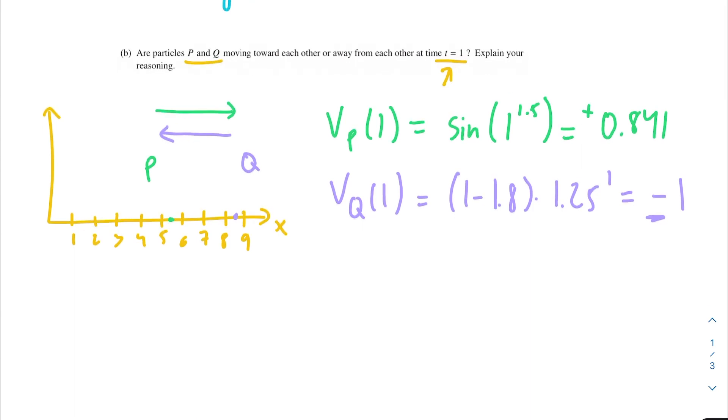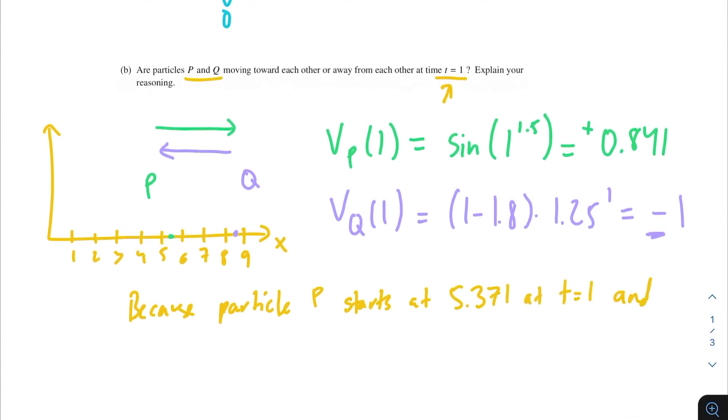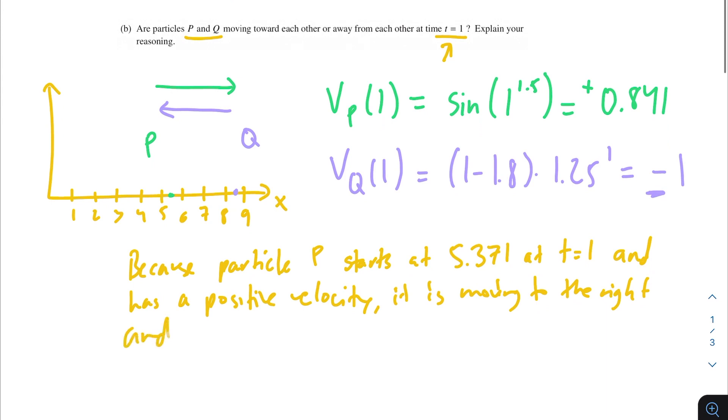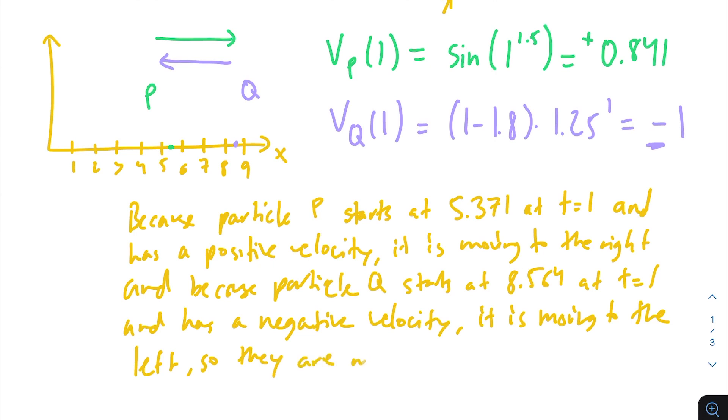We can write that out like because particle P starts at 5.371 at t equals 1 and has a positive velocity, and because particle Q starts at 8.564 at t equals 1 and has a negative velocity, it is moving to the left, so they are moving toward each other. That would work here for this problem. Let's move on to the next problem.